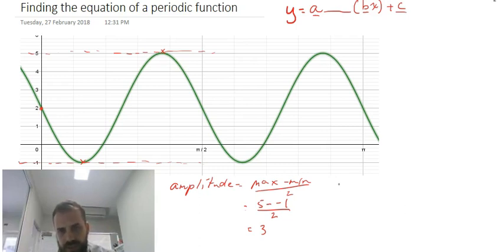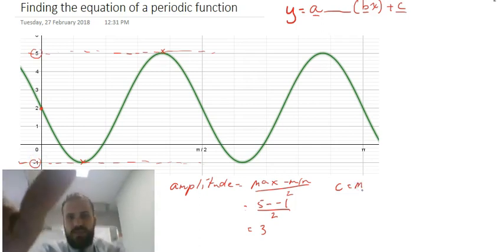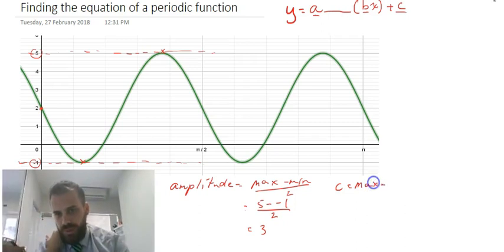Let's look at our c value. Now the c value is the middle of my curve. The top is 5, the minimum is 1. I can find the c value by doing max plus min divided by 2.